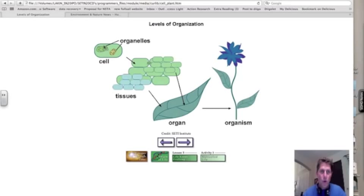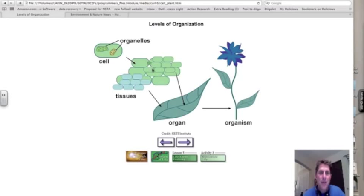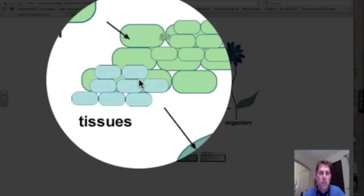So if I have a number of these specialized cells that all work together, we call this a tissue. So specialized cells, the same specialized cells working together is a tissue. If I have a number of tissues working together, now we're looking at the organization of an organ.